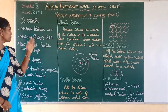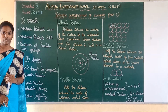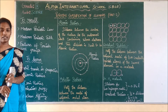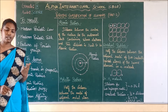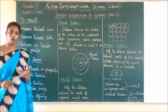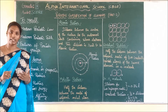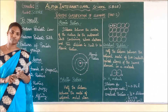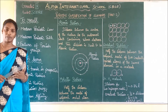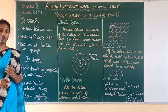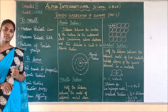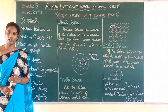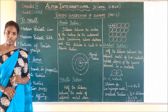What is meant by modern periodic law? The modern periodic law states that the physical and chemical properties of the elements, which have similar properties, repeat after a regular interval. So the atomic number is the fundamental property for the periodicity of elements.